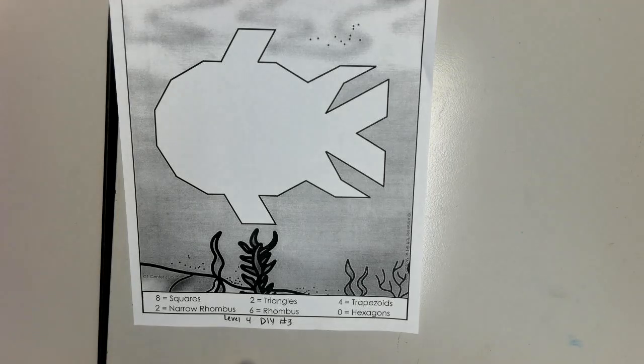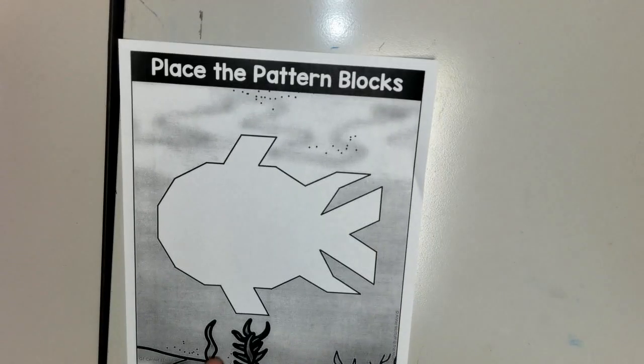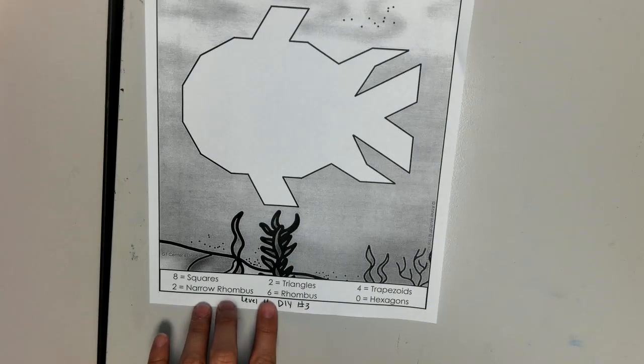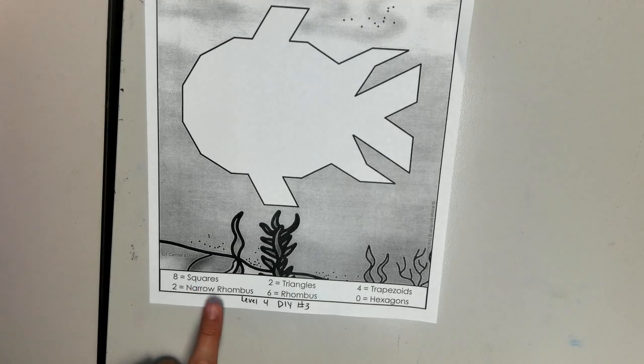Hi guys, this is level 4 DIY number 3. This is called Place the Pattern Box. For this you have a lovely little fish pattern and you're going to fill it using these shapes and these shapes only.